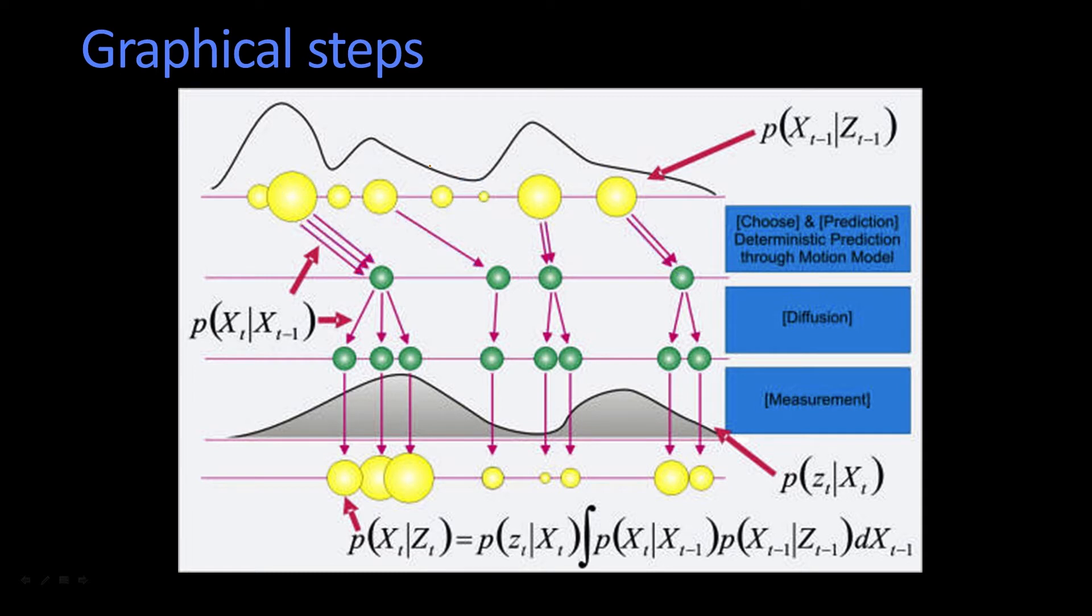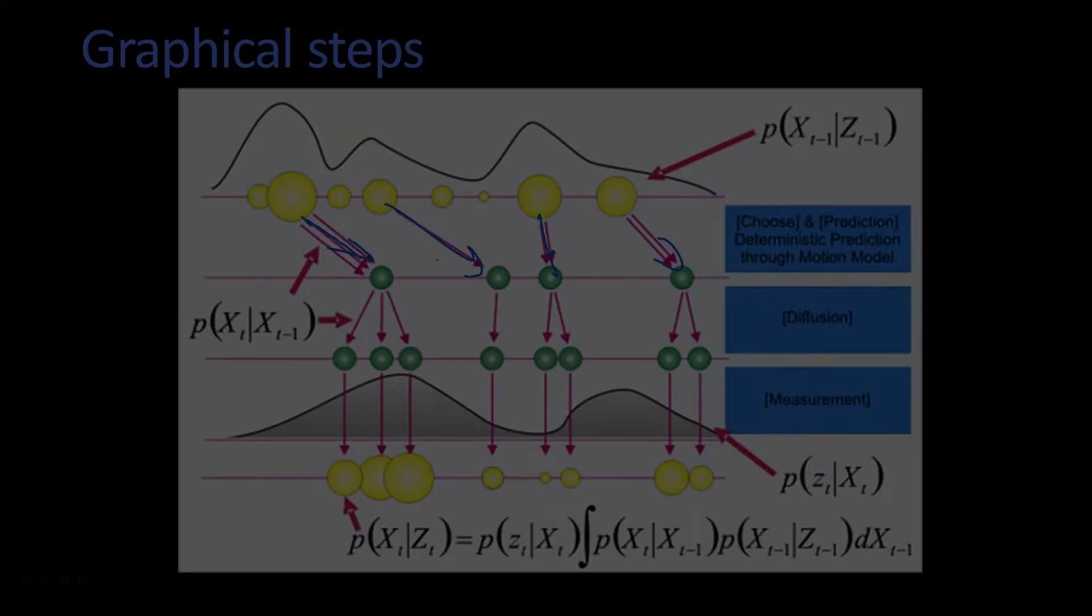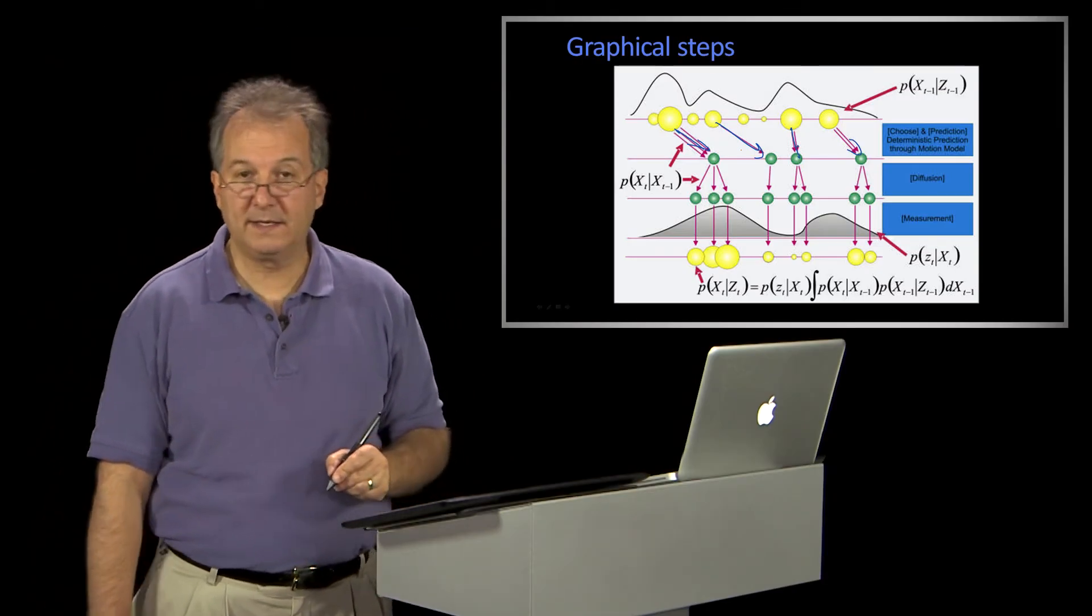So we do the sampling. Now, the next thing you'll see is that each one of these particles has been shifted. But you'll notice that the shifts are not always the same. So why do you think that is? Do you know why that is?